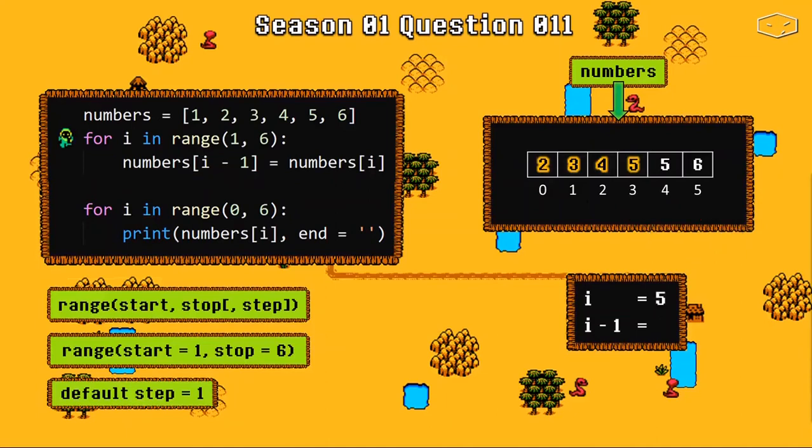The last cycle. i became 5, i minus 1 became 4. Python goes to the index 5 of our list, copies the value and pastes into the previous position.